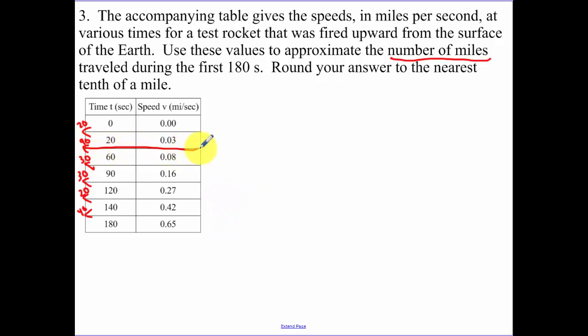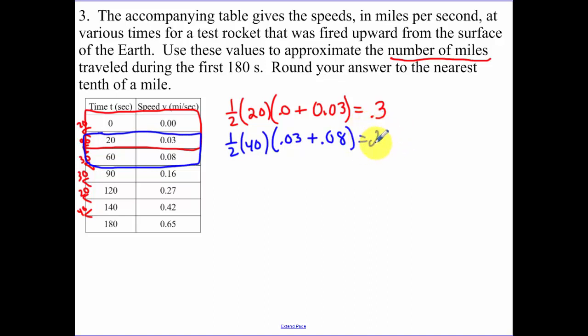The area using the trapezoid of these two pieces. What's the difference between them? That's going to be your height, which is 1/2. My height is 20, base one is 0.0, base two is 0.03. I multiply all that together and I get 0.3. Now we need to find the area in between those. That's 1/2. Your height is the difference between those, which is 40. Then we have base one, base two. Multiplying those together, we get 2.2.